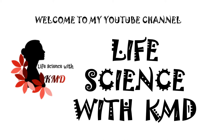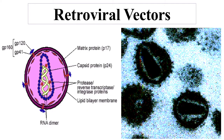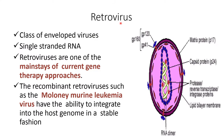Welcome to Life Science with KMD. Today I'm going to explain about retroviral vectors. Retroviruses are a class of enveloped, single-stranded RNA viruses. They are one of the mainstays of current gene therapy approaches. Recombinant retroviruses, such as Moloney murine leukemia virus, have the ability to integrate into the host genome in a stable fashion.